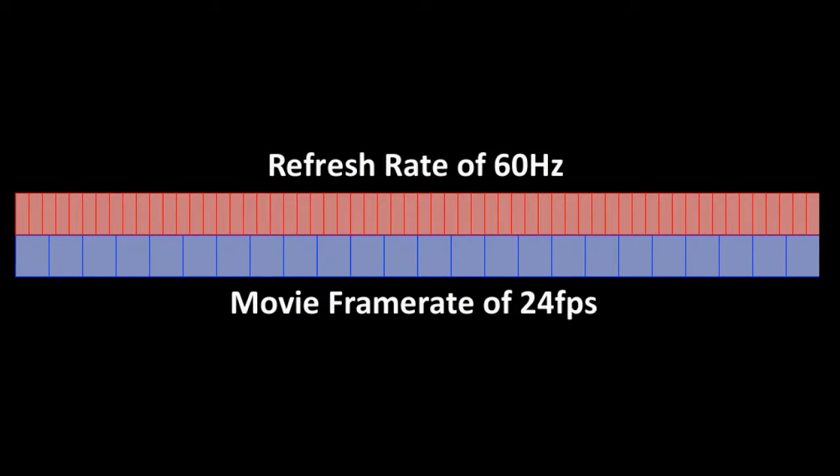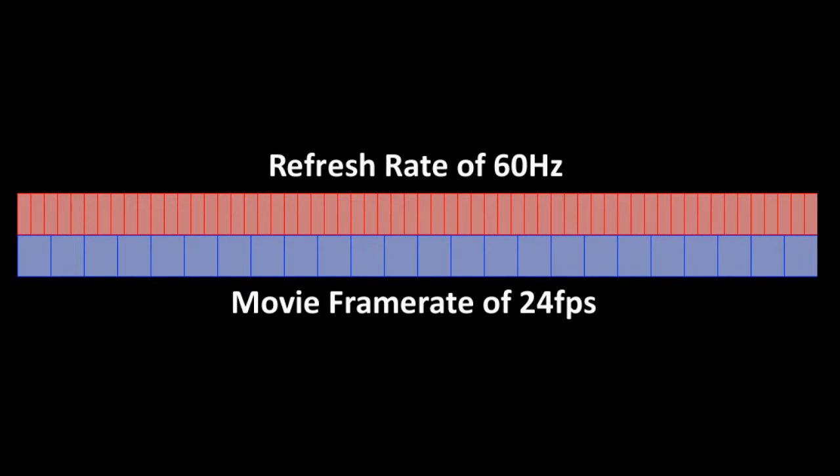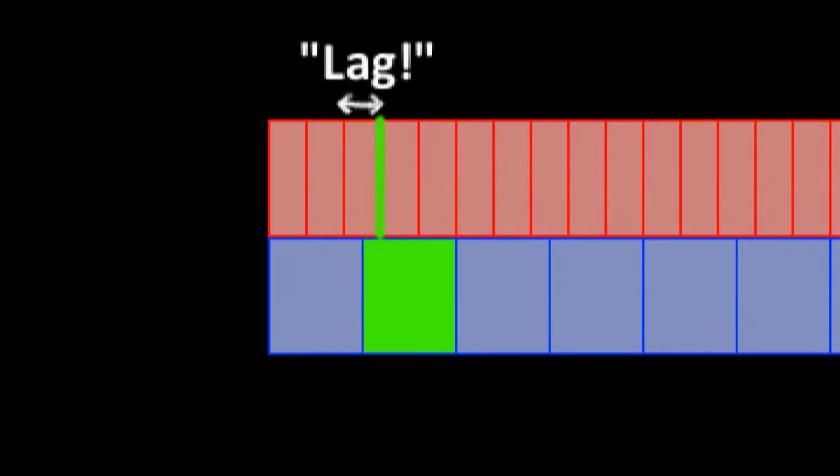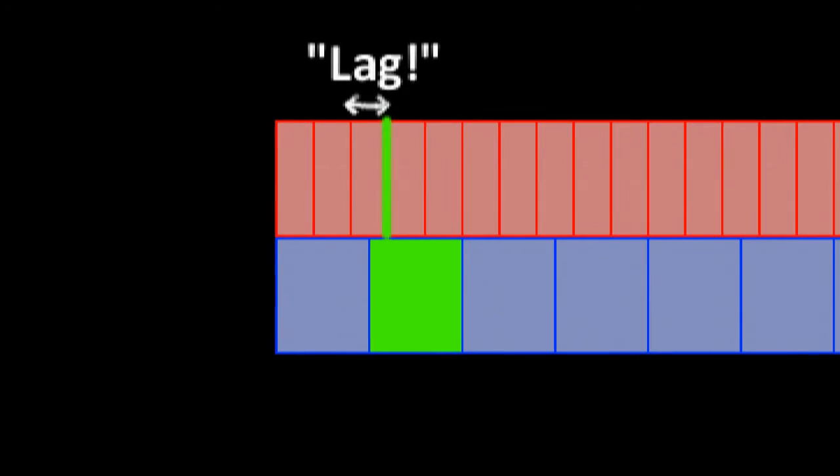Now let's take a look at the same second in terms of frames of the movie. Since there are 24 frames, we cut this bar into 24 pieces. Do you see a problem yet? Essentially, at the first screen refresh, it's going to display the first frame of the movie. Then the next time your screen refreshes, it's still displaying the same frame. But the problem comes here — at this point, your movie says to replace the first frame with the second frame. However, your screen does not actually draw out the frame until a short interval later.